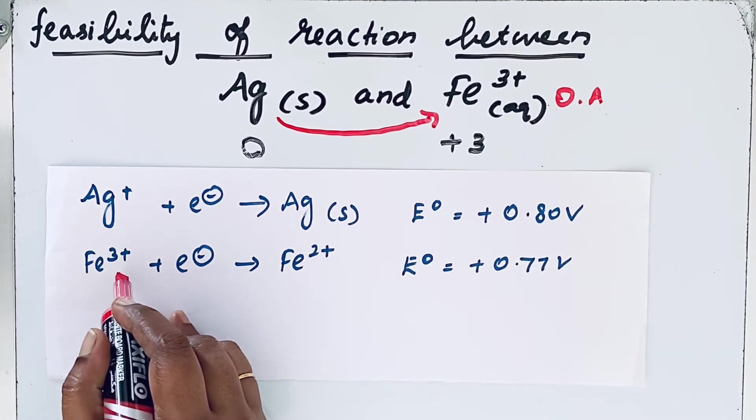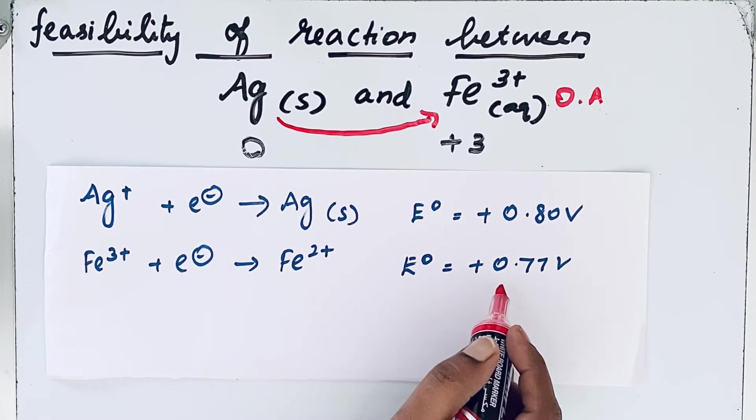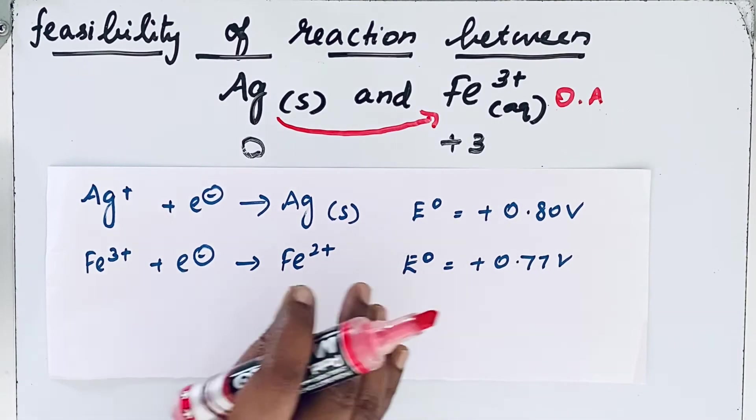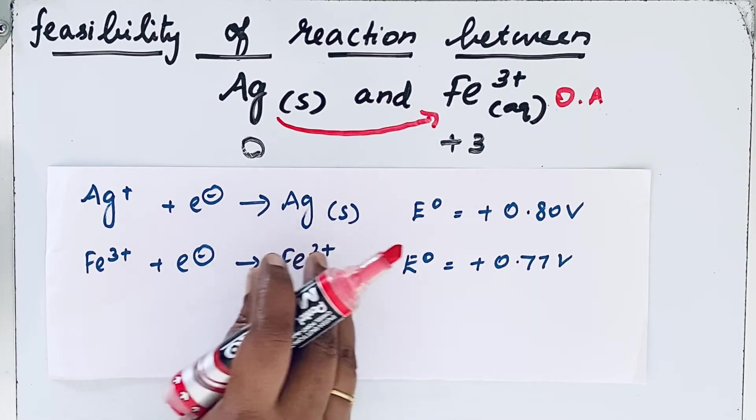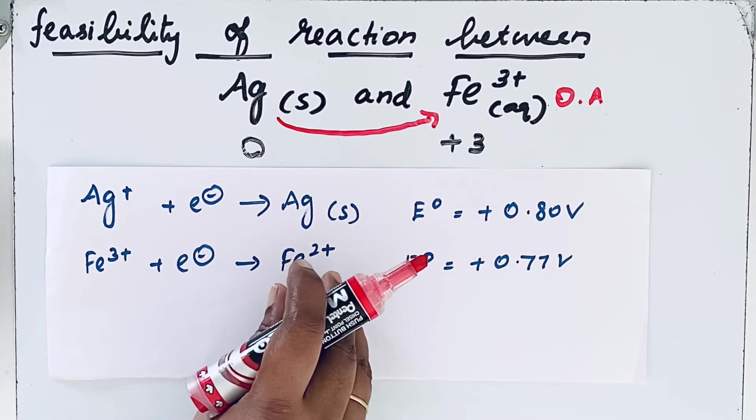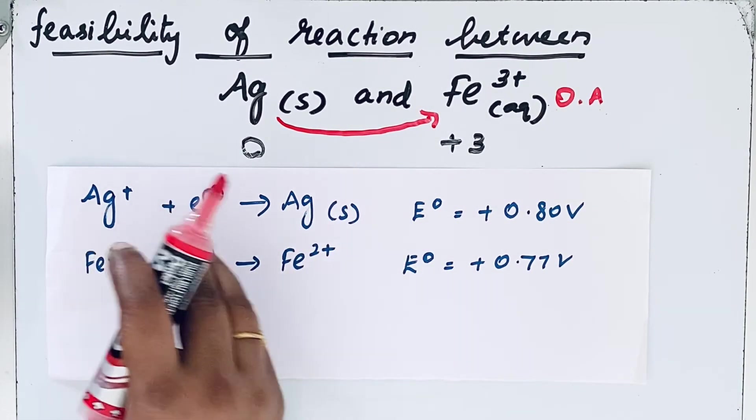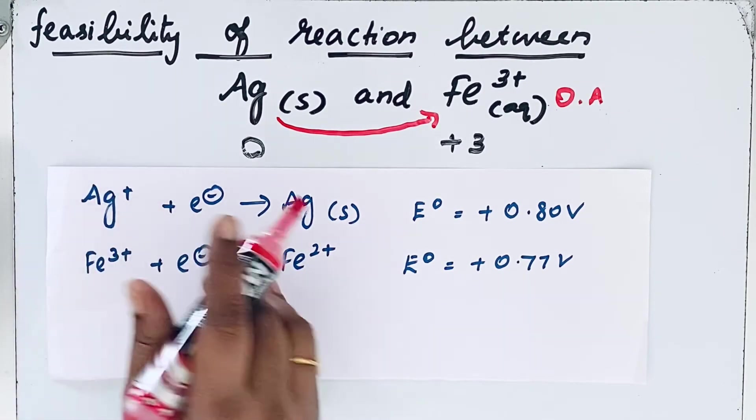When Fe³⁺ gains an electron, the electrode potential is plus 0.77 volt. Here you should remember one thing: in redox reactions, one reagent is oxidized and another reagent is reduced. But see here, both are given in oxidized form to reduced form.